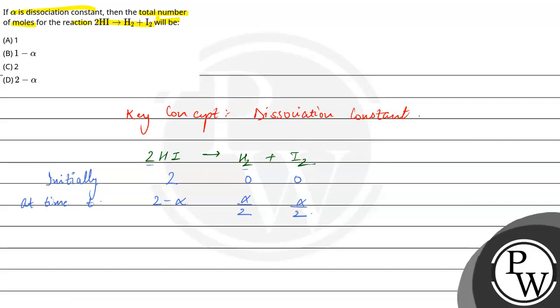So the total number of moles will be... What will come here? It will be 2 minus alpha plus alpha by 2 plus alpha by 2, which is 2.